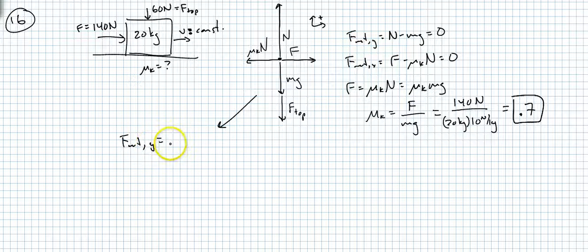So F net Y is N minus MG minus F top, which again is another normal force. You could say we have three normal forces here. Call them all normals with subscripts. That would be fine. F minus mu sub K N is zero.